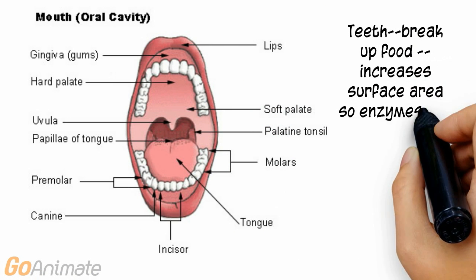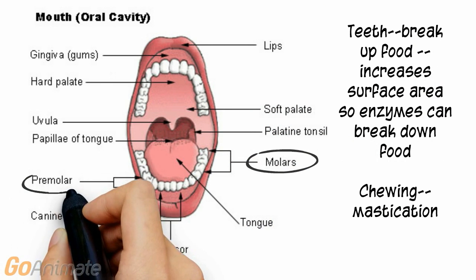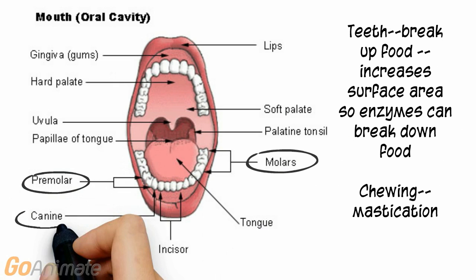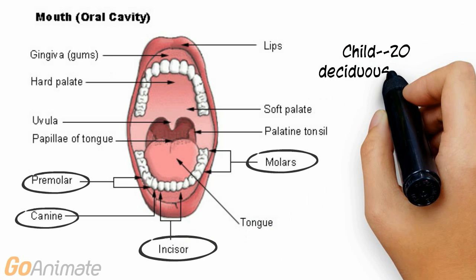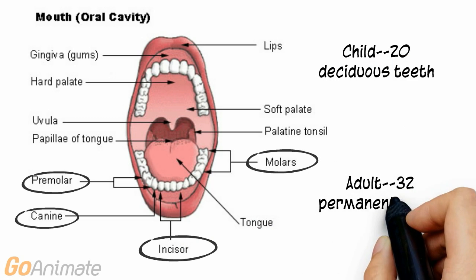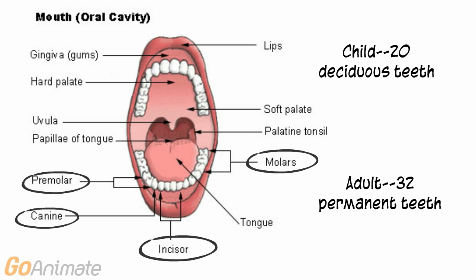The alimentary canal begins in the mouth. Teeth break down food into smaller pieces in a process called chewing or mastication. Types of teeth include molars, premolars, canines, and incisors.